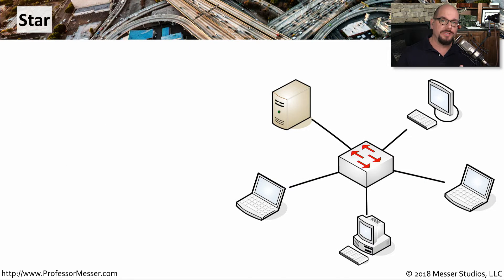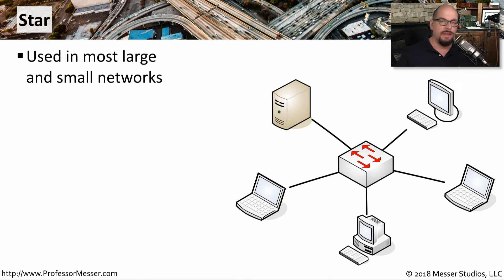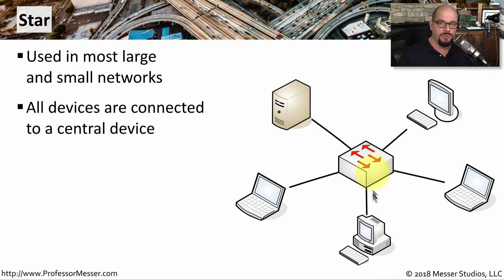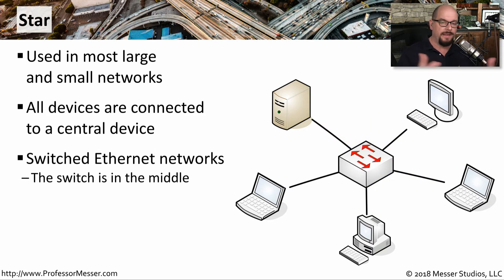There are many different ways to represent a network topology in these diagrams. One topology type is the star network — a very common type in today's switched networks, where you have a centralized device like a switch, and all of the devices are connected directly to it. The switch effectively sits in the middle, and everybody else connects to it over these Ethernet links.